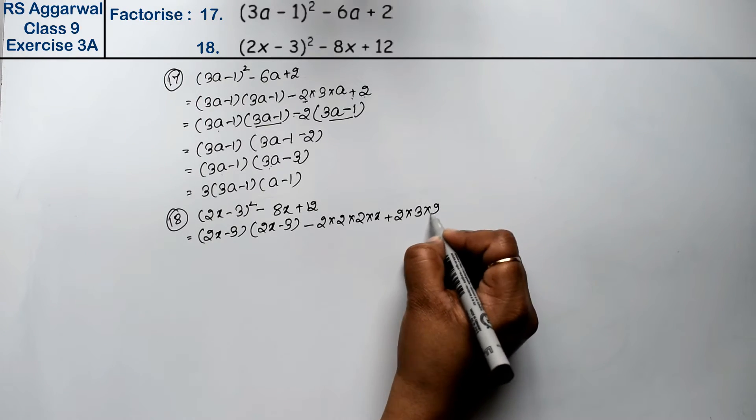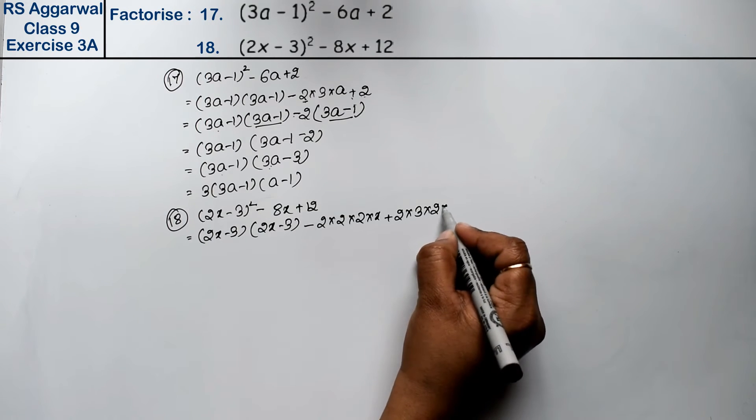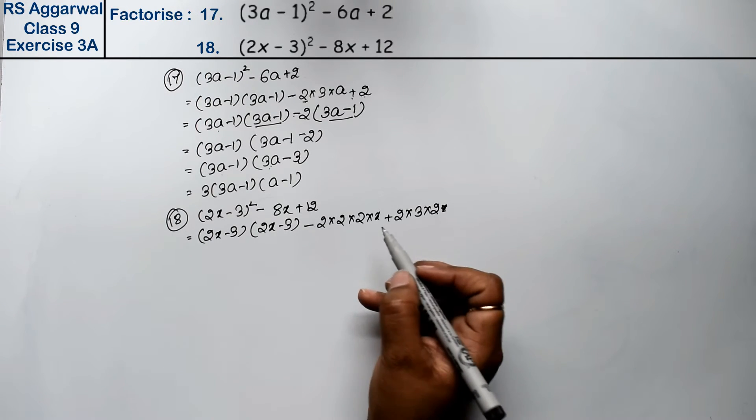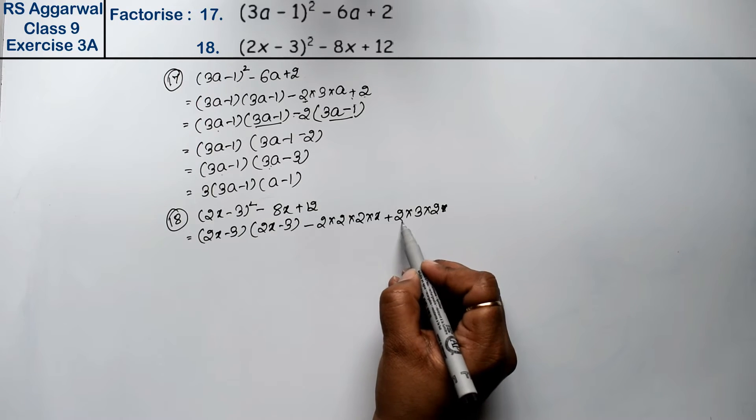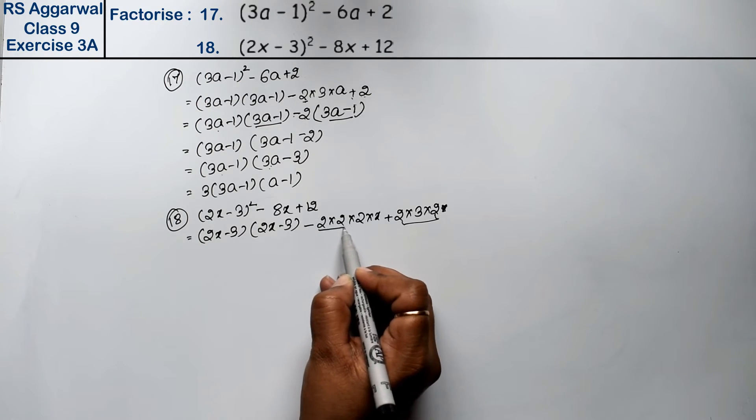3 times 2 is 6, so 6. 2 times 6 is 12. Now let's see, from these we can take 2 common, so we'll take 2 common. What remains? 2x remains, but minus remains.